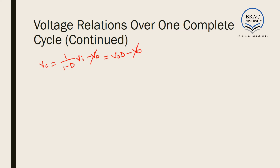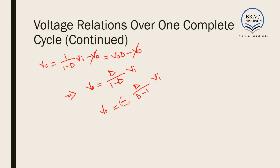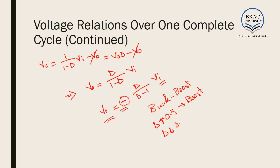Combining equations 5 and 6, we get VOUT equal to D divided by (1 minus D) times VIN. This can also be written as minus D divided by (D minus 1) times VIN. The input-output relation is similar to a buck-boost converter: if D is greater than 0.5 we get boost operation, and if D is less than 0.5 we get buck or step-down operation.